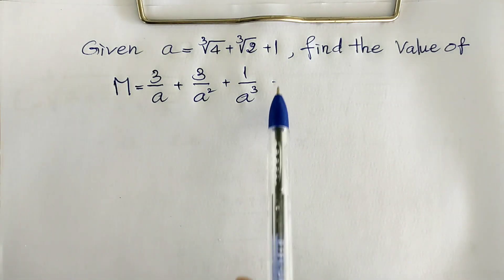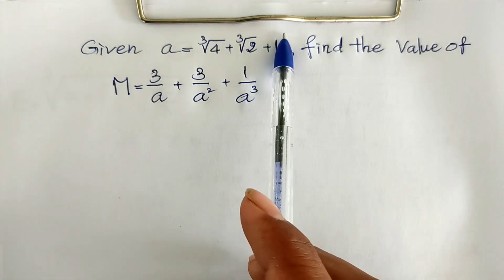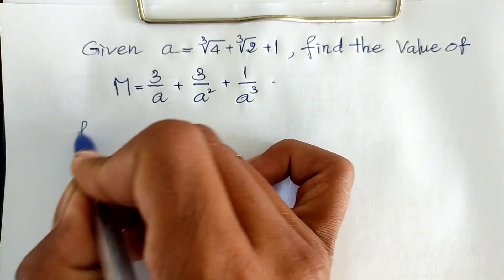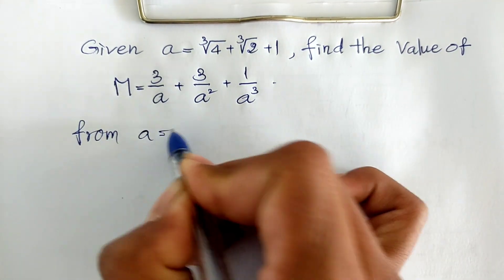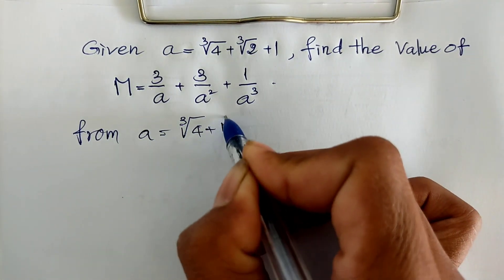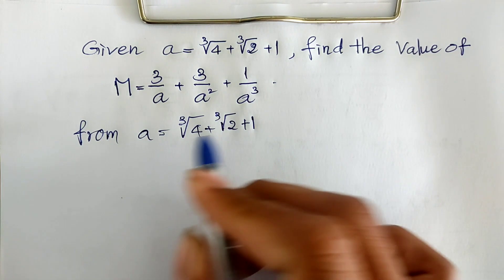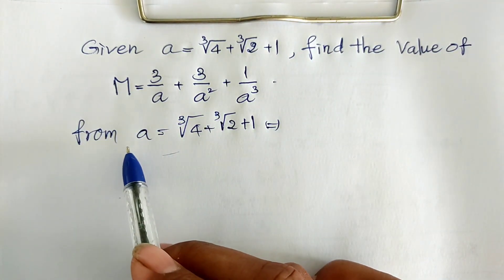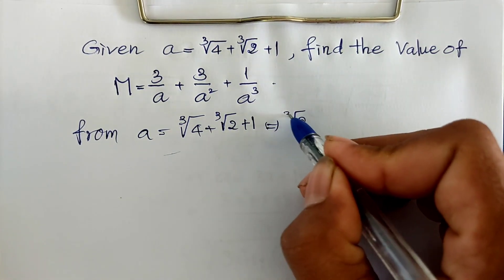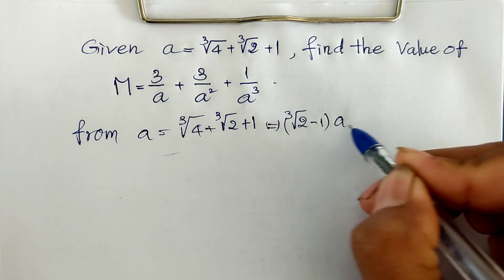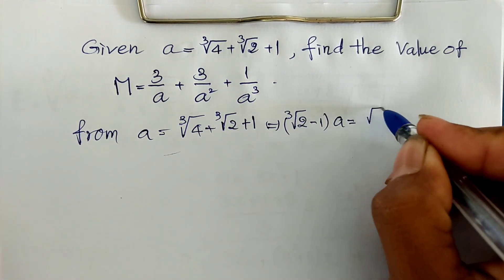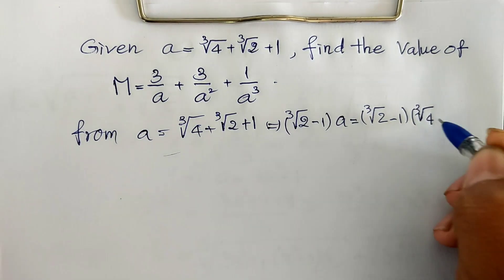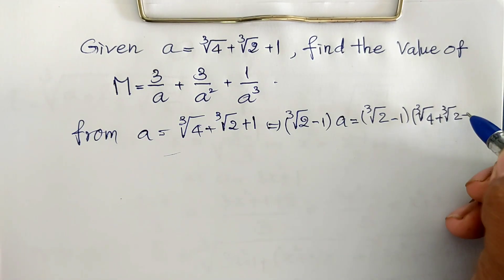To find the value of expression M, we must first simplify the value of A. We have A equal to the cube root of 4 plus cube root of 2 plus 1. Now I multiply both sides of this equation by cube root of 2 minus 1. So we get: cube root of 2 minus 1, multiplied by A, equals cube root of 2 minus 1, multiplied by the quantity cube root of 4 plus cube root of 2 plus 1.